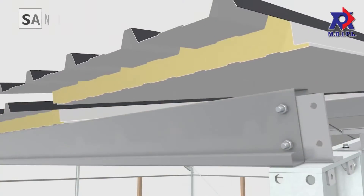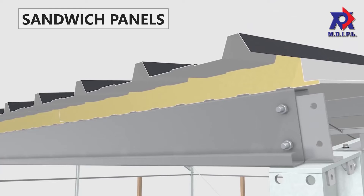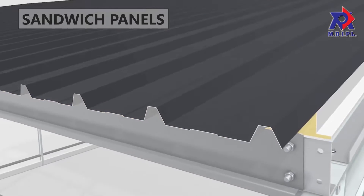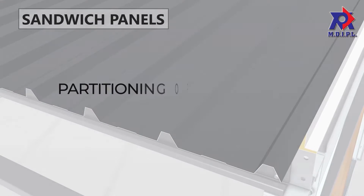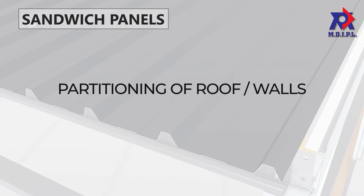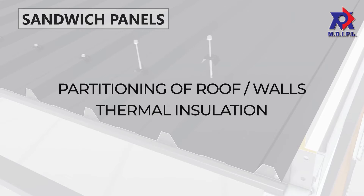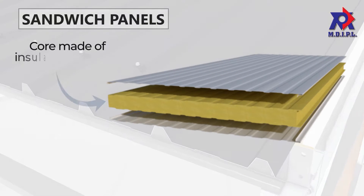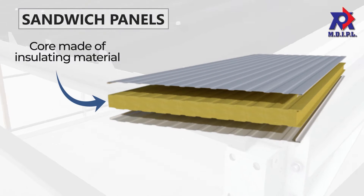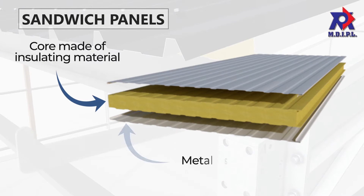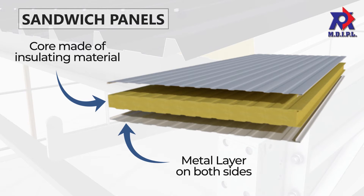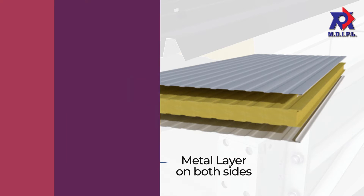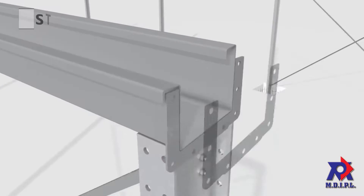First, let's talk about sandwich panels. They are mainly used for partitioning, roofs, or walls, and for thermal insulation. A sandwich panel includes a core made of insulating material sandwiched between two layers of metal, usually steel or aluminum.